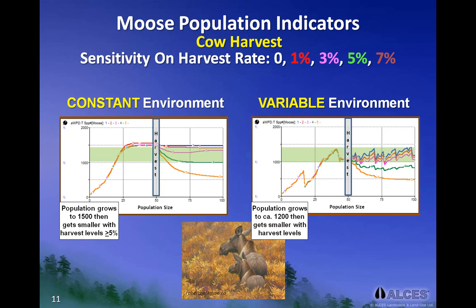This graph shows how the population responds when cows are harvested starting at year 50 and the environment is variable. Generally, the addition of environmental variation causes the population to fluctuate over time, which in turn makes the population more sensitive to cow harvesting. The population graph shows similar trends to the scenario when cows were harvested in a constant environment, but the population is more variable and is not able to rebound as quickly from harvesting. The population graph shows that as we increase the proportion of cows harvested from 1% through to 7% of the total number of adults, total population size decreases accordingly. At the end of the simulation run, a 7% rate of cow harvest has reduced the population size from an average of 1,200 animals to just under 500, which is approximately 40% of the initial population size.